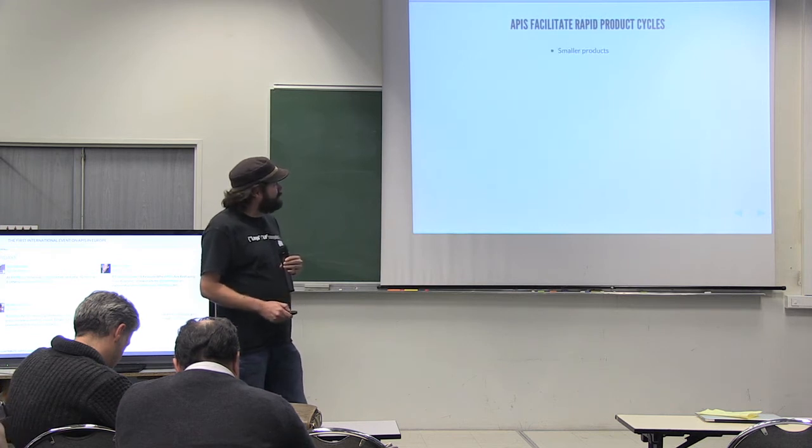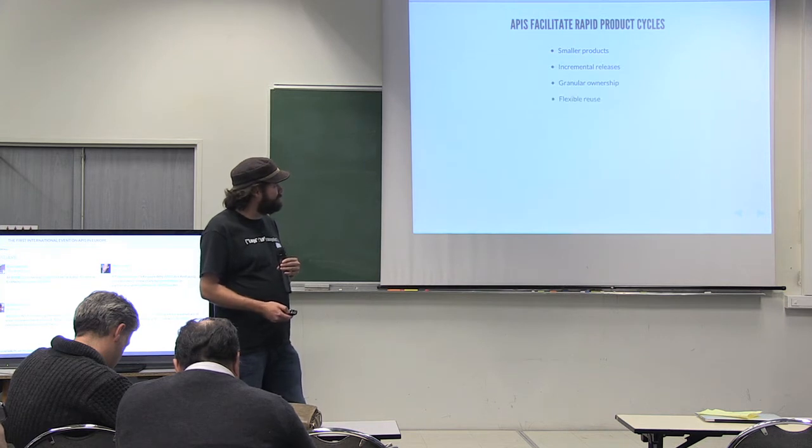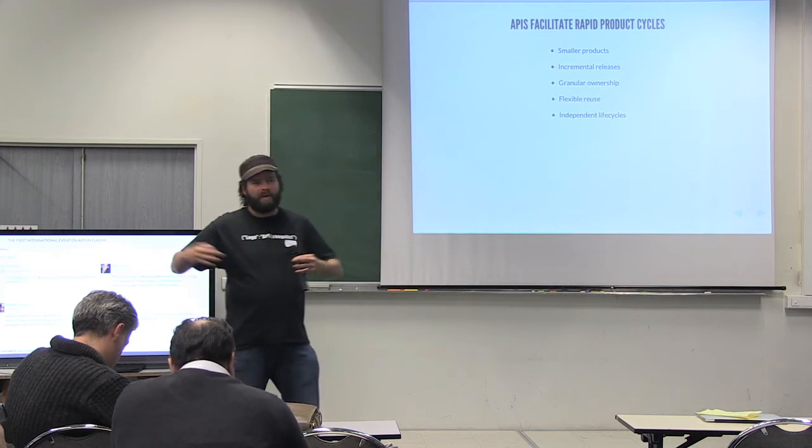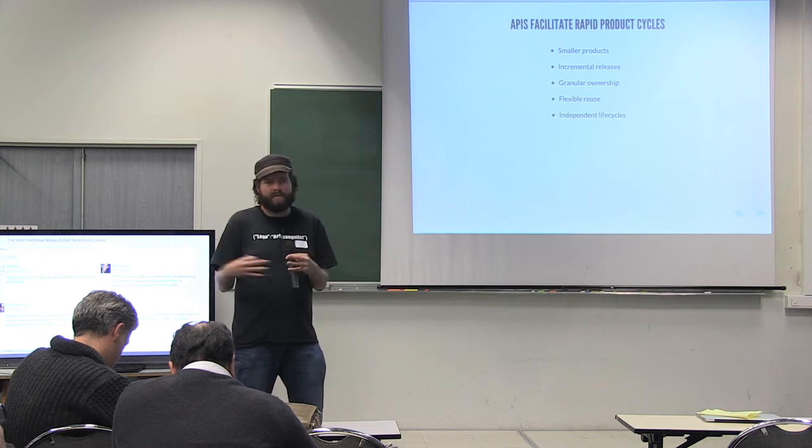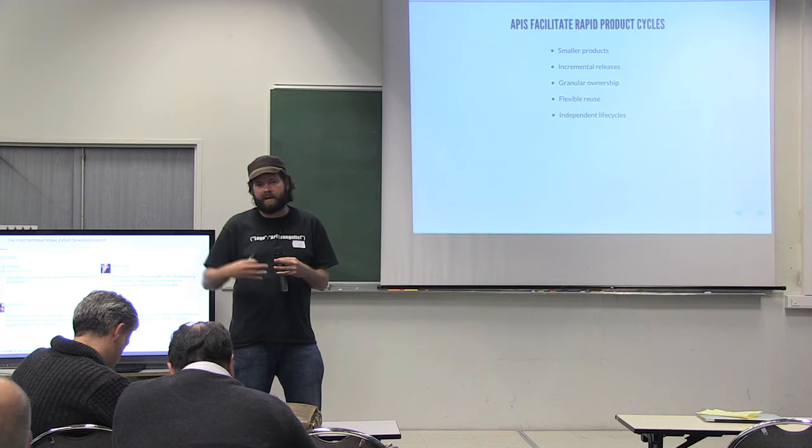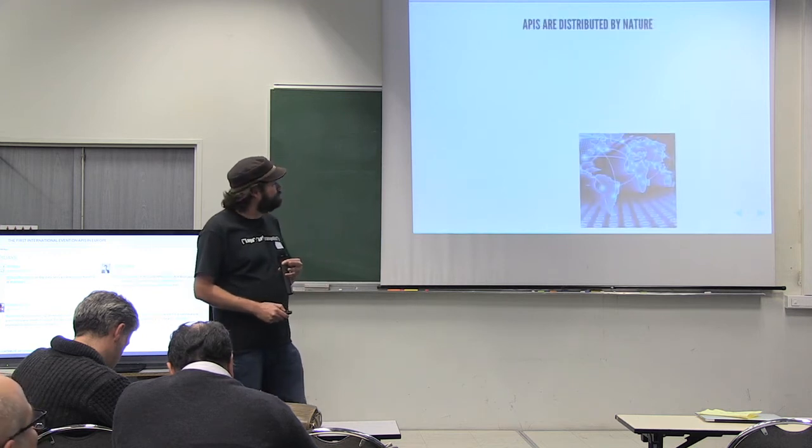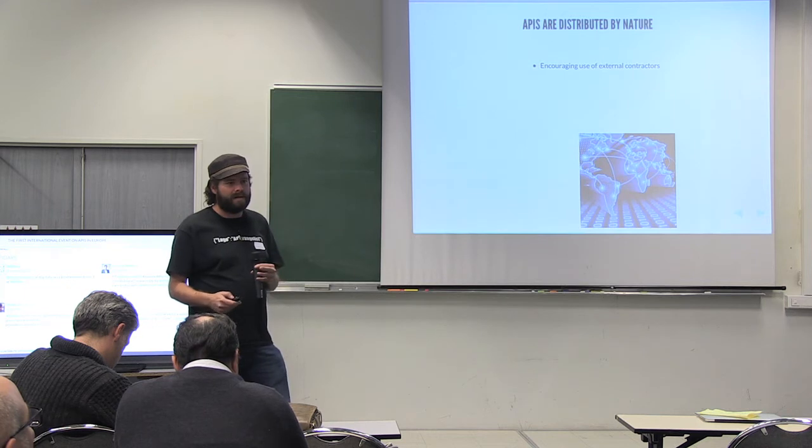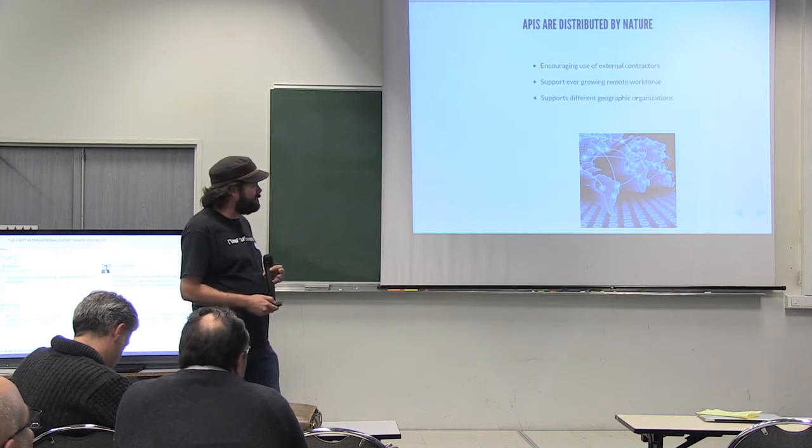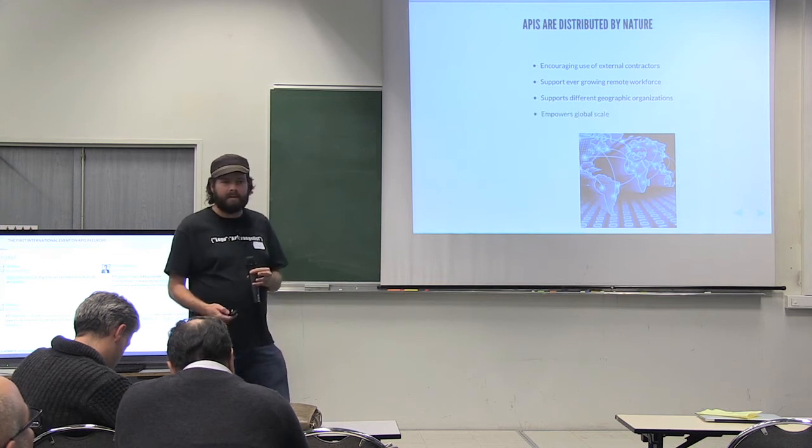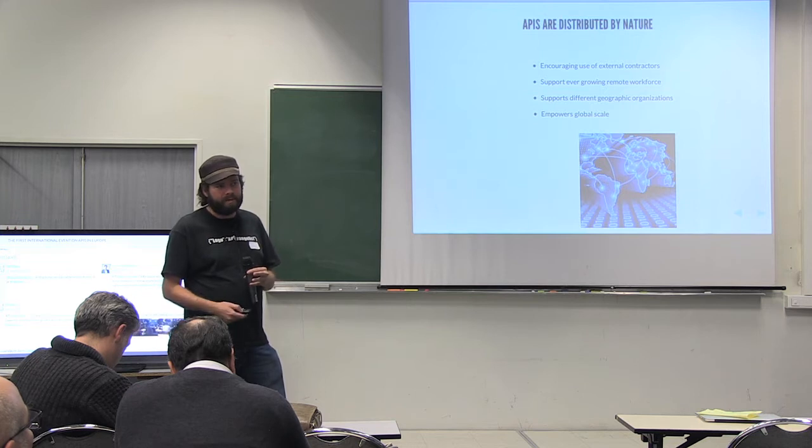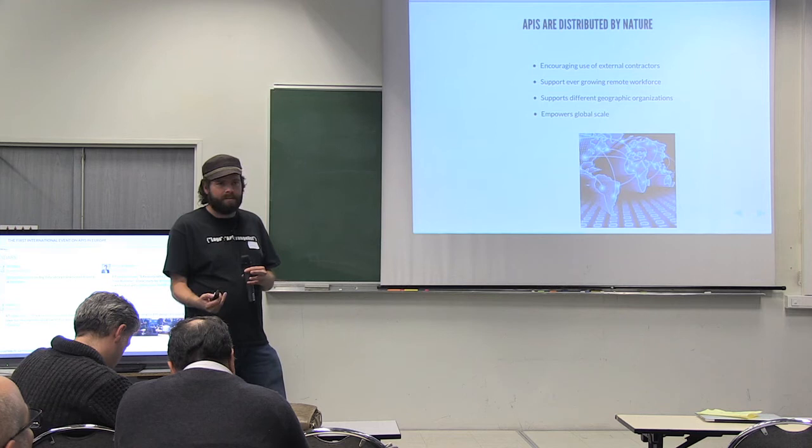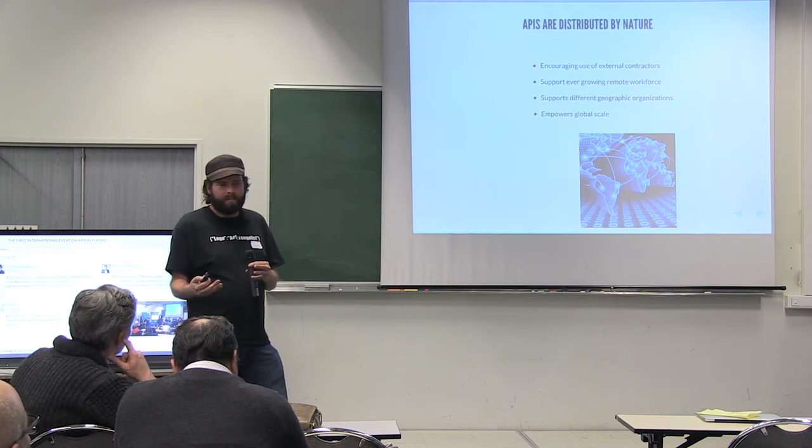APIs facilitate rapid product cycles. Smaller products, incremental releases, granular ownership, flexible reuse, independent life cycles. So you can really do a lot more. You don't get bound up with all that interconnectedness. I mean, there's going to be certain systems that rely on that interconnectedness. But it allows you to think of product life cycles in much smaller, bite-sized chunks. So APIs are distributed by nature. They encourage use of external contractors. They support ever-growing remote workforce. Support different geographic regions. And it really will empower you to scale at a global level. And I think that's one of the successes of APIs because they're built on HTTP. HTTP is already web scale. It's already out there. It's already the World Wide Web. So building web APIs on them just makes sense.